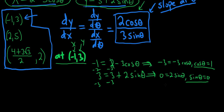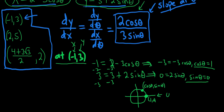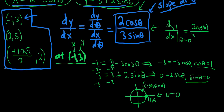When is cosθ = 1 and sinθ = 0 simultaneously? Thinking about the unit circle, cosine is the x-coordinate and sine is the y-coordinate, so every ordered pair is of the form (cosθ, sinθ). We're looking at the point (1, 0) on the unit circle, and the angle there is θ = 0. Plugging θ = 0 into dy/dx gives 2cos(0) over 3sin(0) = 2/0, which is undefined.